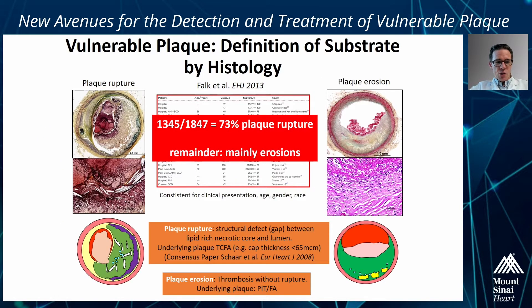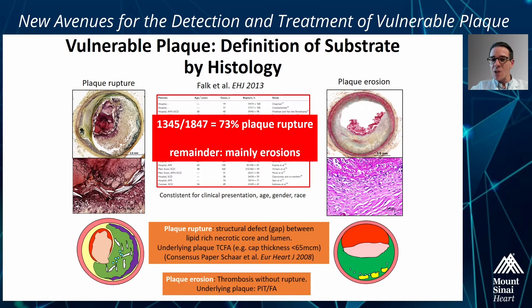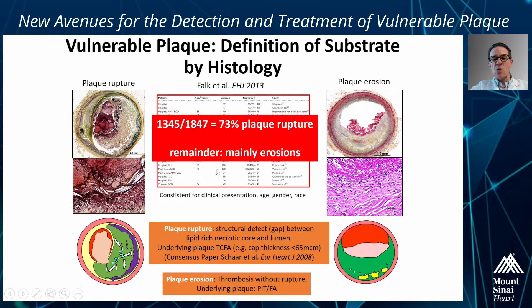The morphological architecture of plaques leading to coronary thrombosis and subsequent death is characterized in two-thirds of cases by a lipid or necrotic core, a large plaque burden that does not necessarily compromise the lumen so much, and a thin overlying fibrous cap with macrophages on top. As shown in this large meta-analysis summarizing more than 1,800 autopsy deaths, this plaque type was found to be the leading cause for coronary thrombosis.